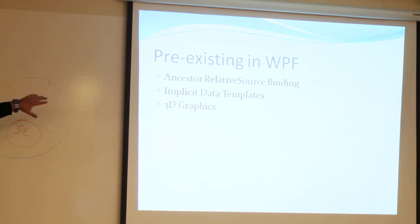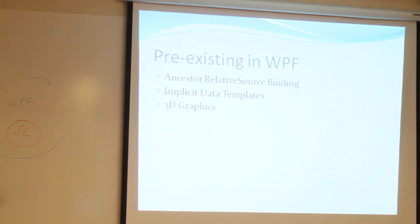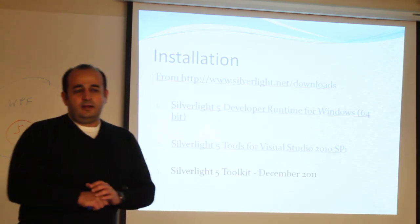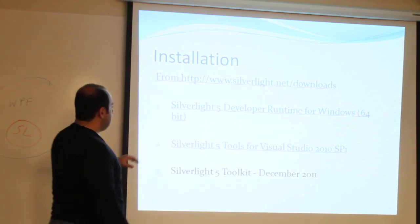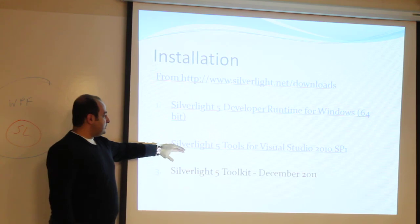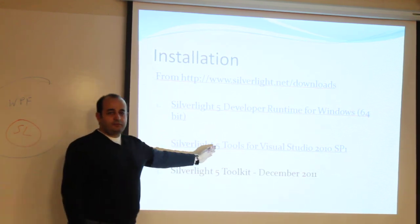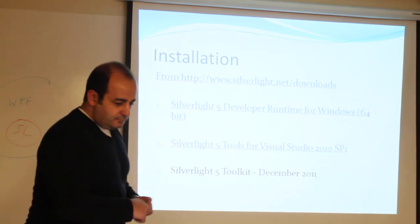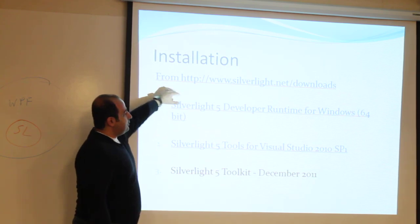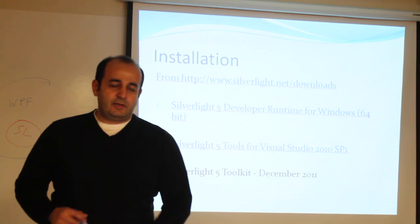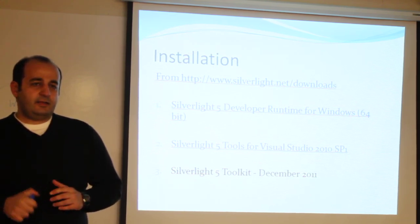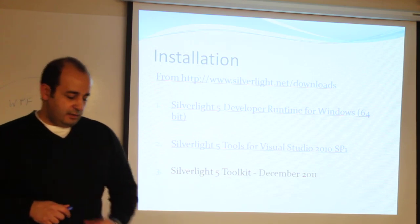Those three right off the top are relative source binding, implicit data templates, and 3D graphics — we've been able to do those within the desktop environment, and now they've moved over into the Silverlight realm. When installing, you run through and get your developer runtime, then your Silverlight 5 tools. Note there's a difference between Silverlight 5 tools and the Silverlight 5 toolkit — those are two different downloads, though you can get them from Silverlight.net. The only issue I've had was with the 3D, which we won't be able to see tonight, but I think it can be resolved through reinstallation.